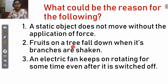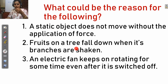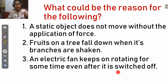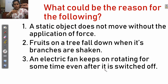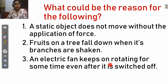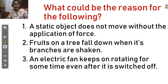The second example is: fruits on the tree fall down when its branches are shaken. The third example: an electric fan keeps on rotating for some time even after it is switched off — when you switch off the fan, it keeps rotating for some seconds. Do you know the answers to these three questions? Don't worry, you will get all three answers from Newton's first law of motion.